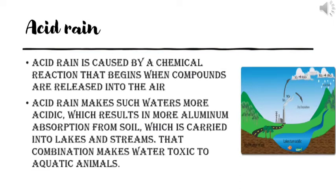Acid rain: Acid rain is caused by a chemical reaction that begins when compounds are released into the air, which may result in more ionic absorption from soil and makes water toxic to aquatic animals.